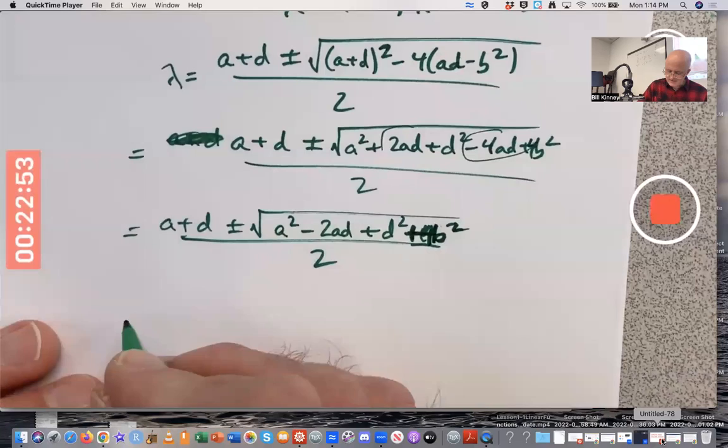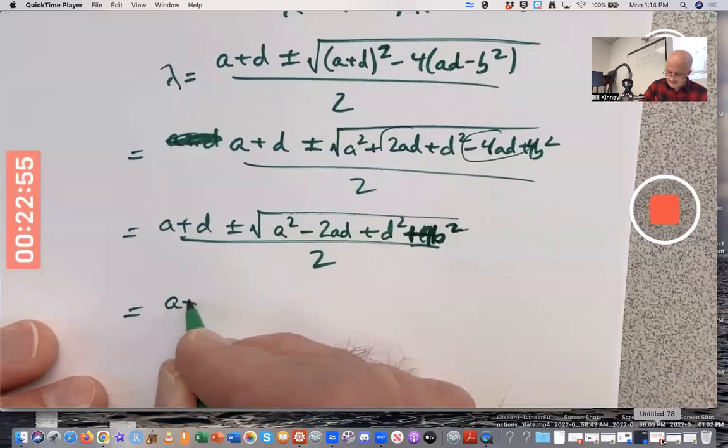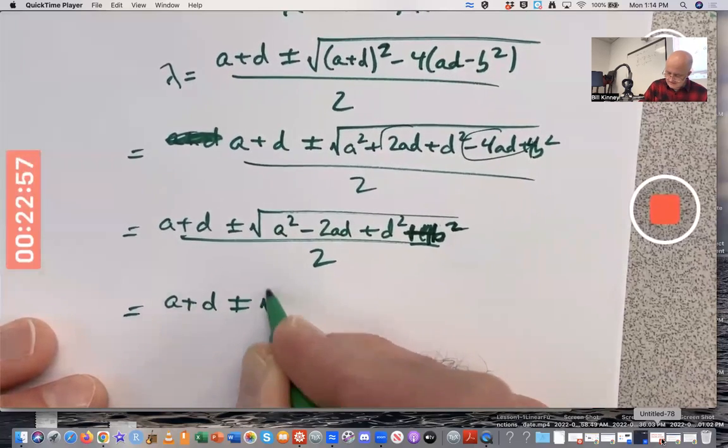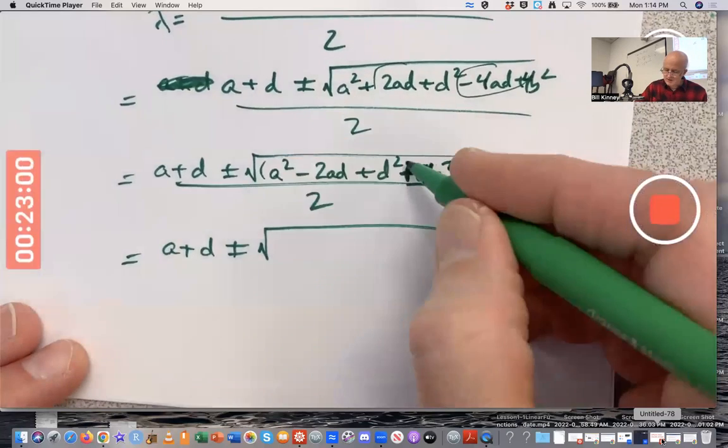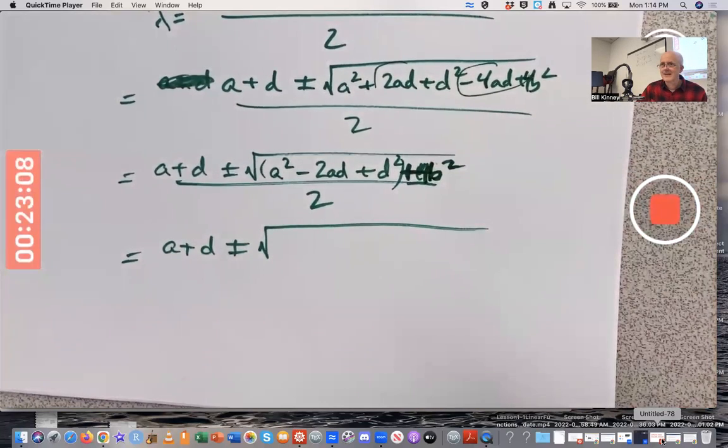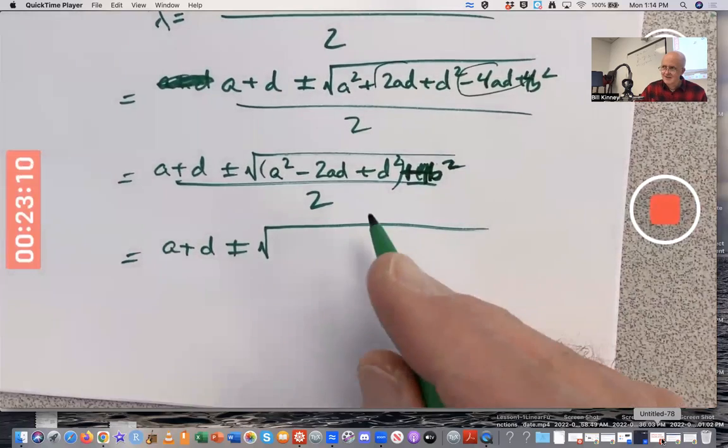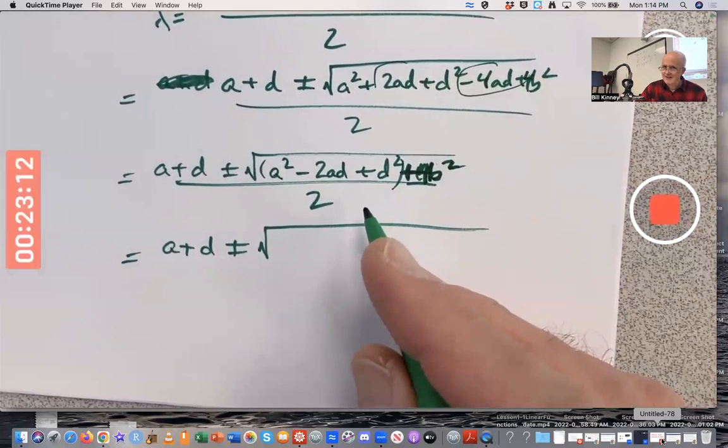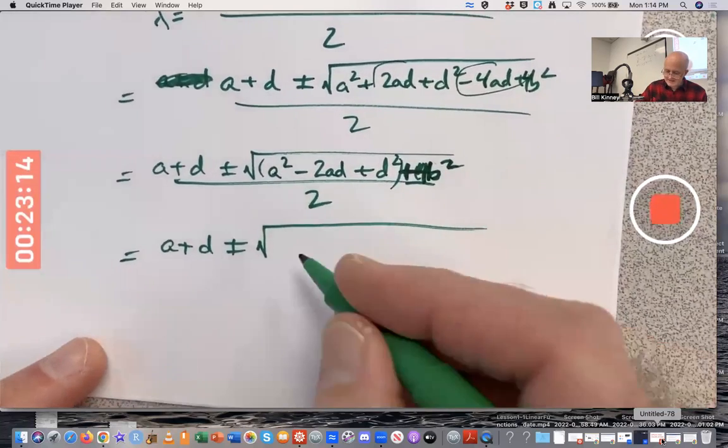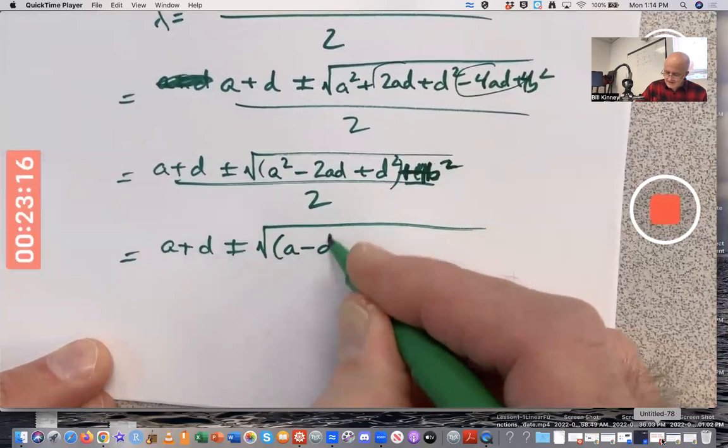I claim there's something nice about what's under the square root. Does anybody see what I'm getting at as far as saying it's nice? There's something nice about this part here. Anything stick out at you? Can you factor that? It's a perfect square. It's A minus D quantity squared.